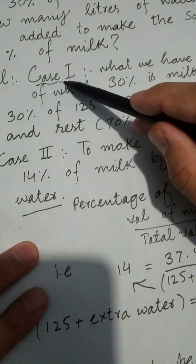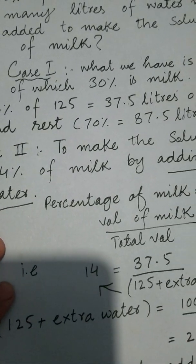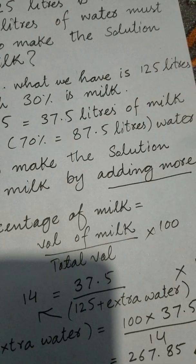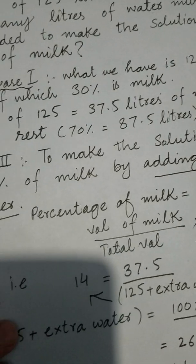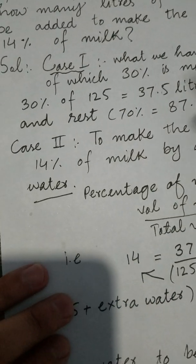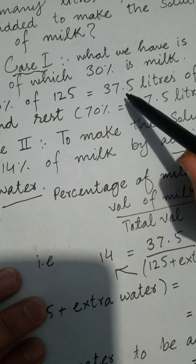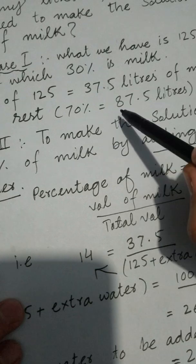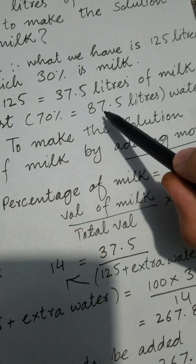So there are two cases. What we have given, the data we have, is 125 liters of the solution of which 30% is milk. 30% of 125, which is 37.5 liters of milk, and the rest is 70%, which is 87.5 liters of water.